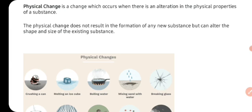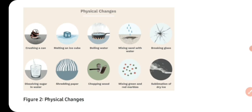Physical change mein koi naya substance nahi banta hai. The physical change doesn't result in the formation of any new substance, but can alter the shape and size of the existing substance. Sirf uski physical property mein alteration aata hai — koi naya substance is mein nahi banta hai. For example, yahan pe aap kuch physical changes dekh sakte hai. Crushing a can — agar aap kisi can ko crush karte hai, to bas uska shape and size change hoga. Koi naya substance nahi banta.